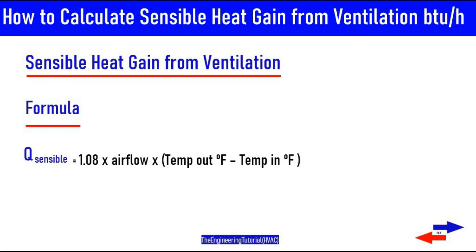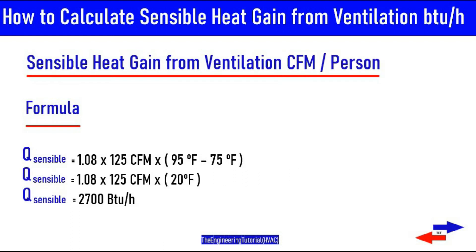For the first example, using the CFM per person method: Q equals 1.08 times 125 CFM times (95°F minus 75°F), which gives us 2,700 BTUs per hour. So 2,700 BTUs per hour is the amount of heat gain from ventilation that must be cooled and dehumidified before it can be delivered to the space.